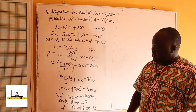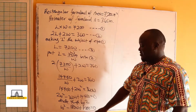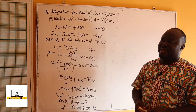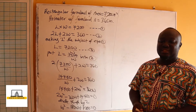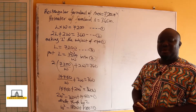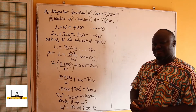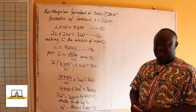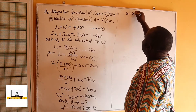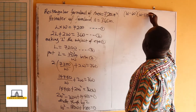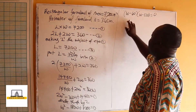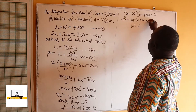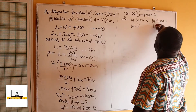We need two numbers that multiply to give 7,200 and add to give minus 180. Those numbers are minus 60 and minus 120. Minus 60 times minus 120 is 7,200, and minus 60 plus minus 120 gives minus 180. So we factorize to get (W minus 60)(W minus 120) equals 0, giving W equals 60 or W equals 120.